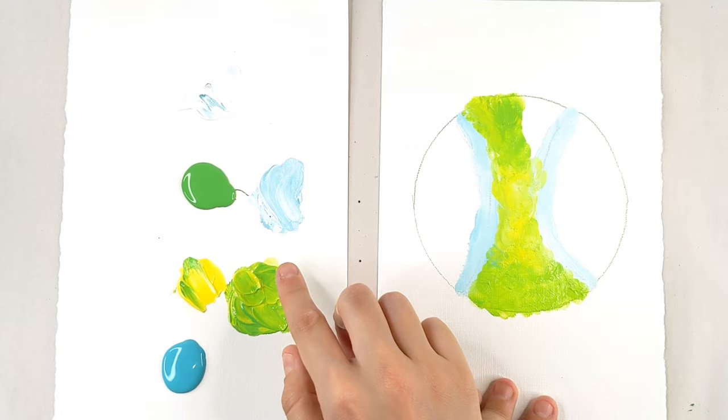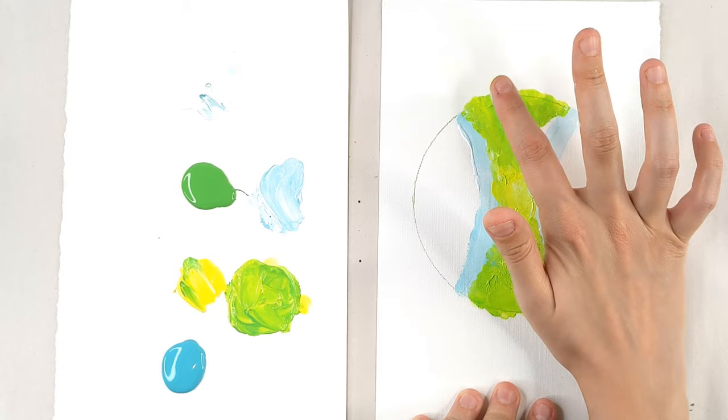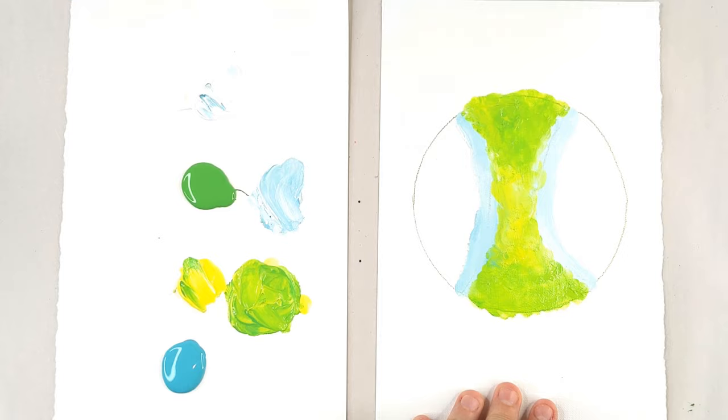And you can have a little bit of variation. And this is all we're going to do. You just go around. I find it's easier to do the center of the tennis ball first, and then we can go to the outsides.